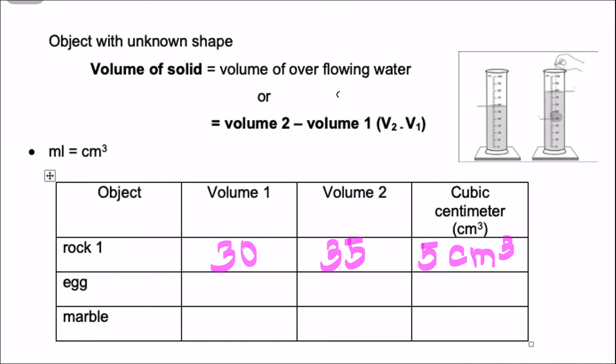How about the egg? What is volume 1? 200. What is volume 2? 265. And what is your answer? 65 cubic centimeter.